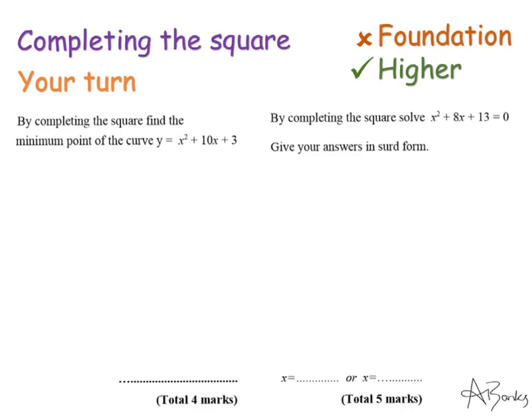Here's two questions for you to try. The first one, you'll need to complete the square and then state the minimum point or minimum value as a coordinate. The second one, you need to complete the square first and then solve it and give your answer in its surd form, which again would be non-calculator. Pause the video and unpause when you're ready to see the solutions.